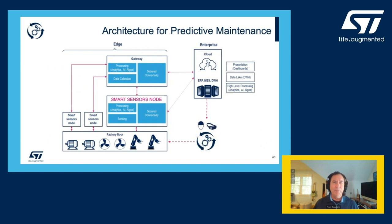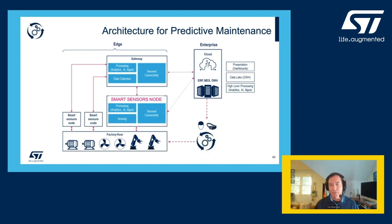Predictive maintenance is implemented as a closed-loop system between the equipment — for example, on the factory floor — and the analysis tools, which could be in the factory floor, in the gateway, or in the cloud. The data is collected on the end node, and by utilizing distributed communication capabilities, the processing of data is accomplished at any of those three places. There is a trend to push more and more decision making to the edge or to the sensor node for reasons of security, less data transmission, and lower overall power consumption.